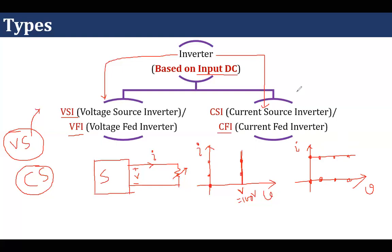There could be a third category where a source can be a mixture of both voltage and current source, and its example is a solar panel. This is the reason why in the case of a solar panel, we have to have an external circuit that will extract maximum power from the solar panel, because in normal use we can't extract maximum power from it. Whenever this topic comes up, we will talk about it in detail.